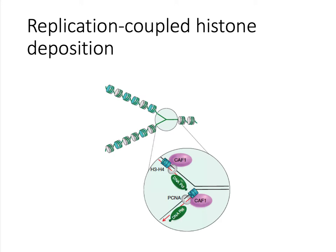Here is a diagram of the replication fork. The old histones, shown in gray, are distributed to both of the new DNA double strands. The histone chaperone CAF1 brings in the H3-H4 dimer right after the DNA polymerase has moved through. This is the first step in nucleosome assembly. FACT, or NAP1, can bring in H2A-H2B dimers as needed.